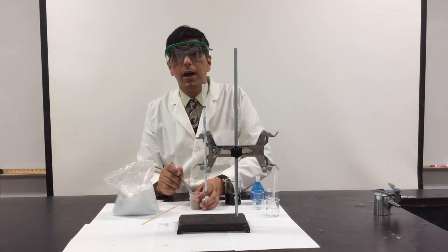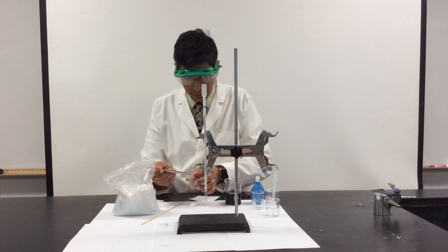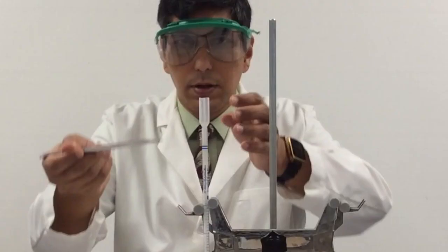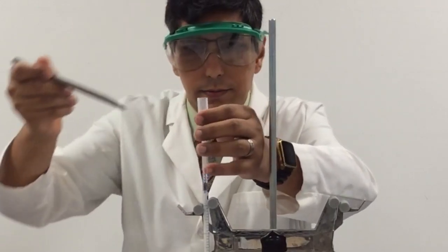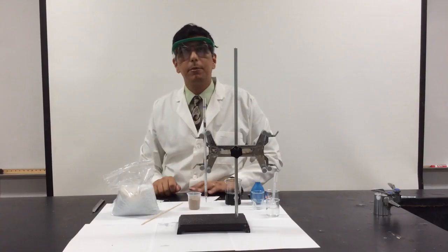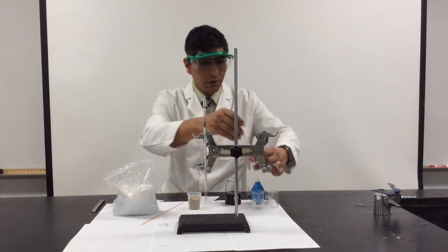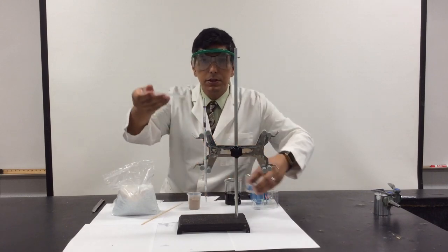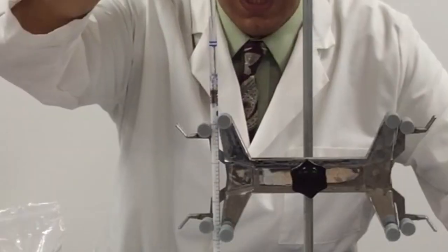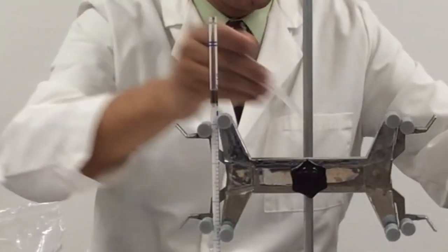And to top it all off, I'm going to add a little bit of sand to the top of the column. Now I'm going to use this to separate the dyes out of grape Kool-Aid. The first thing that you want to do though, before you actually start the separation, is to put some distilled water into the top of the column to moisten the column.